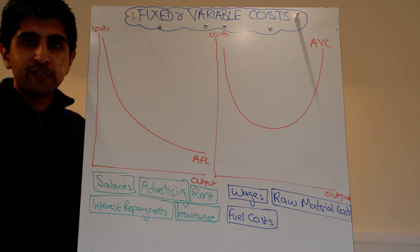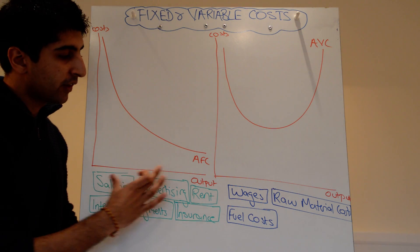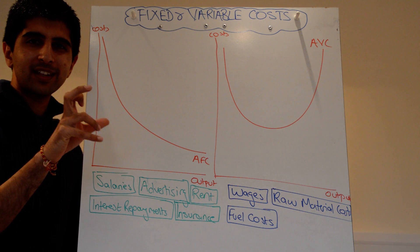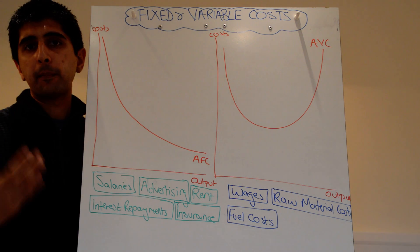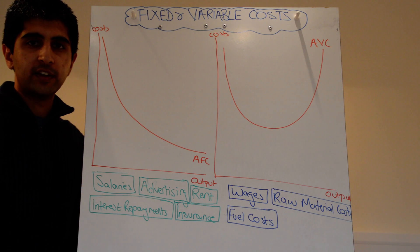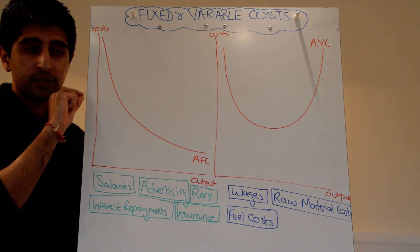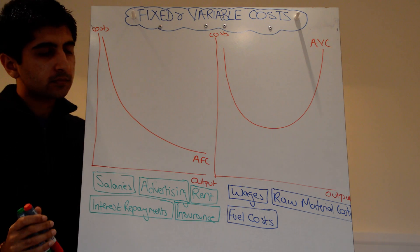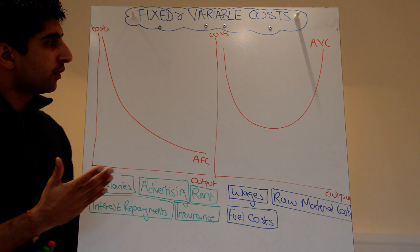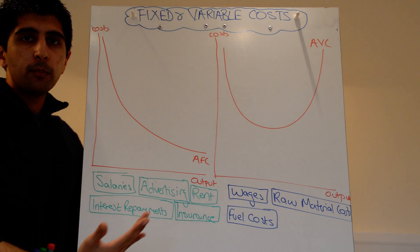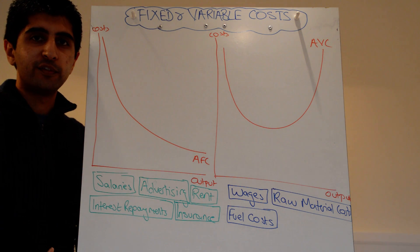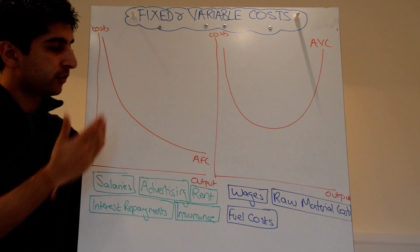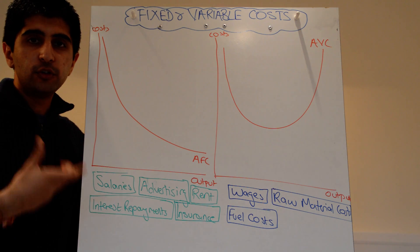Your total fixed costs over a given time period will just be a horizontal straight line — a fixed amount in total. So maybe for a firm it will be £100,000 total fixed costs, and over a range of output that cost will stay exactly the same. On average, however, as you produce more and more, you can spread your fixed costs over a greater range of output, so your average fixed costs will start to fall.